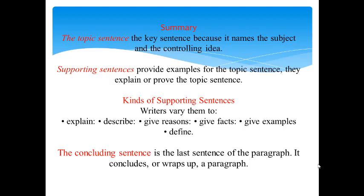Supporting sentences provide examples for the topic sentence; they explain or prove it. The kinds of supporting sentences include those that explain, describe, give reasons, define facts, give examples, and define. As for the concluding sentence, it is the last sentence of the paragraph — it concludes or wraps up. A good concluding sentence signals the end and summarizes the important points briefly or restates the topic sentence in different ways.